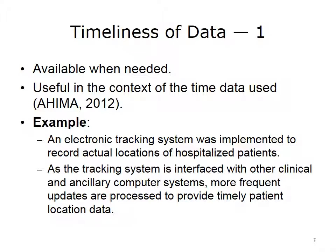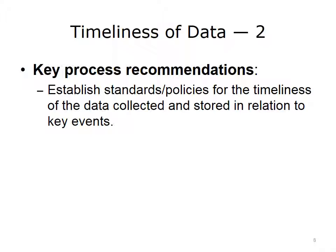Over time, interfaces with other systems, such as pharmacy, laboratory, dietary, and other ancillary services systems, have been built. The increased demand for current data about patient location has required more timely updates to the system to conduct daily business and inform the decisions that are made related to patient care and census management. Application of the data quality management model includes working with the team to establish standards or policies for the timeliness of the data collected and stored in relation to key events. Timeliness is defined by the use of the data. For example, hourly or daily census data may be needed to support decisions such as daily staffing, where monthly or annual census data would be used for longer-range planning such as budgeting or strategic planning. Timely analyses allow for the opportunity to monitor progress and make course corrections to avoid negative outcomes.